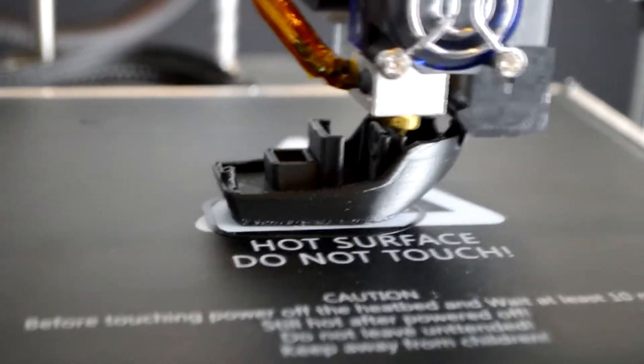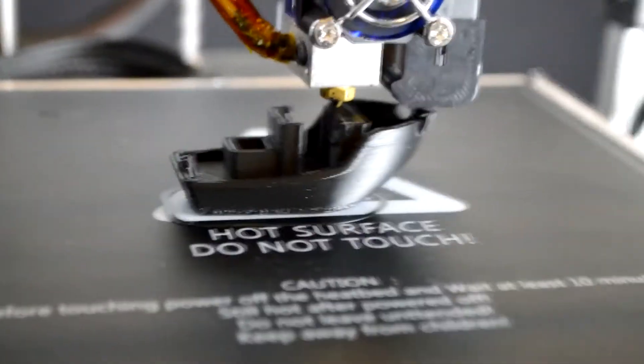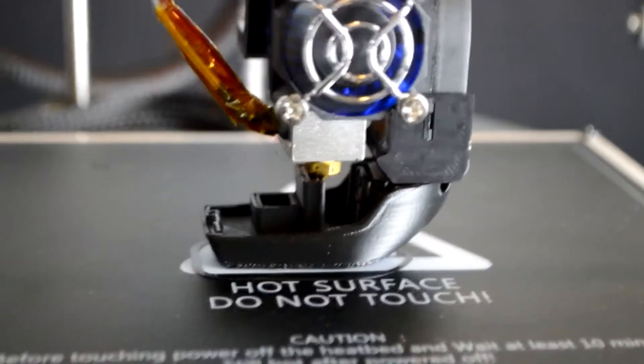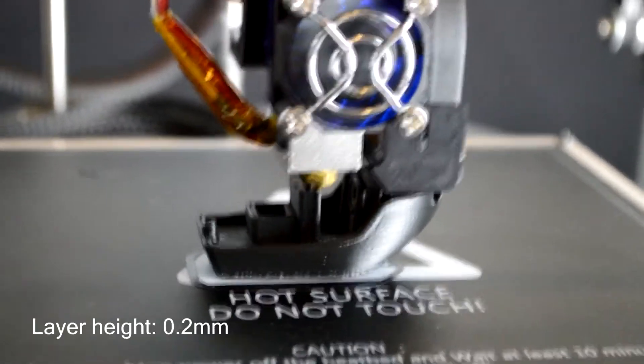So I'm currently printing this benchy at 65mm per second, with the outer shells printing at about 35mm per second.